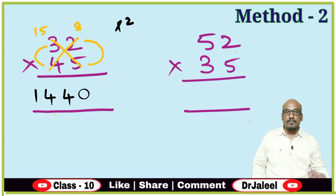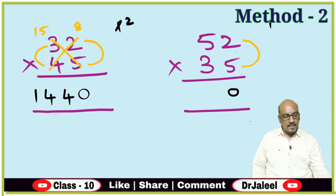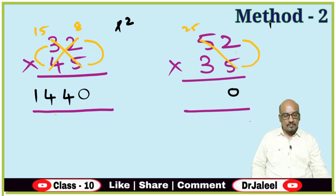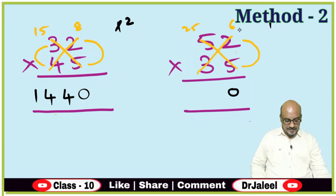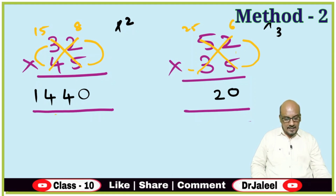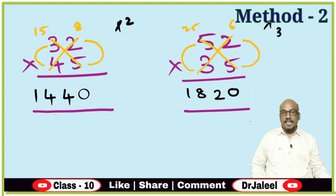Next example — 65 × 28. Right side digits: 5 × 2 is 10. Write 0 here and carry forward 1. Cross multiplication: 5 × 5 is 25 and 3 × 6 is 18 — wait, that is 6 × 2 is 12 and... 25 plus 6 is 31, plus 1 carry forward is 32. Write 2 here and carry forward 3. Left side digits: 3 × 5 is 15, plus 3 carry forward is 18. So the answer is 1820.